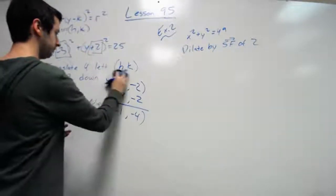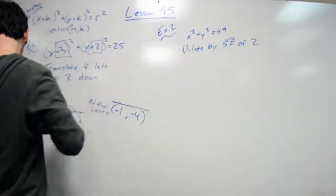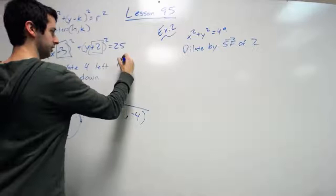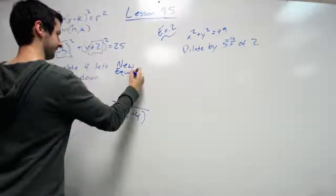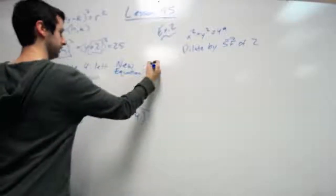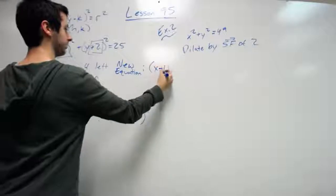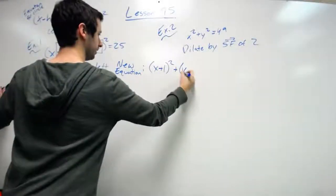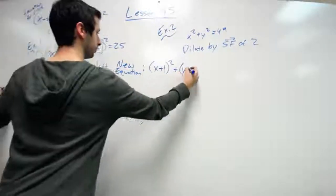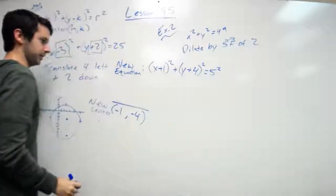The new equation would be x, now it's a negative, so when we put it in, it would become a plus one squared, plus y, once again a negative, so plus four squared equals five squared, or 25.